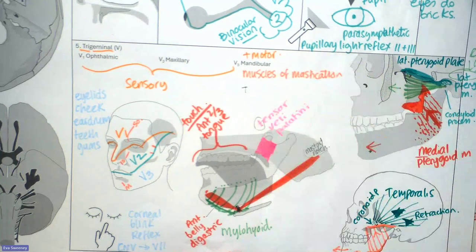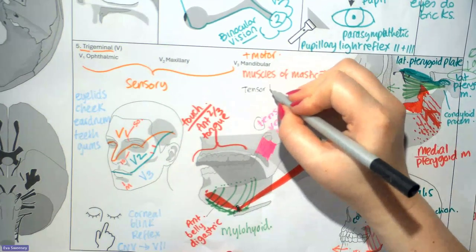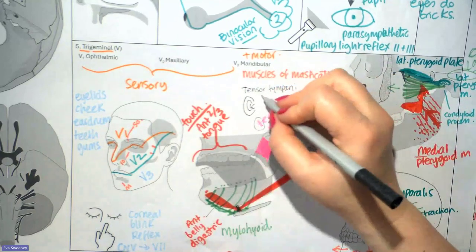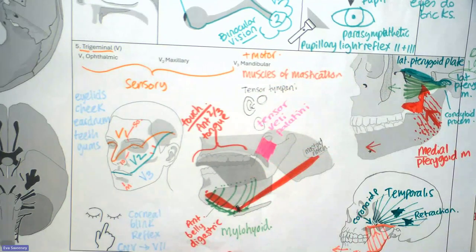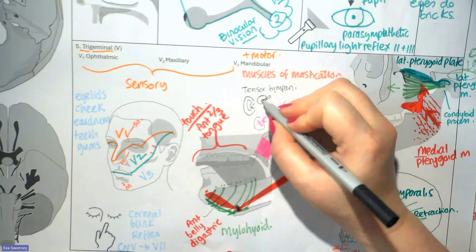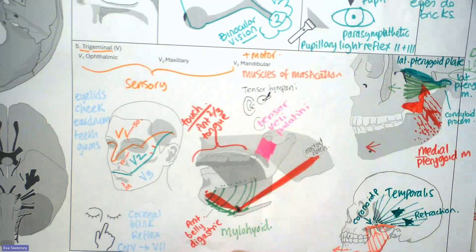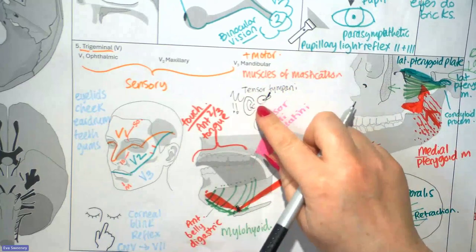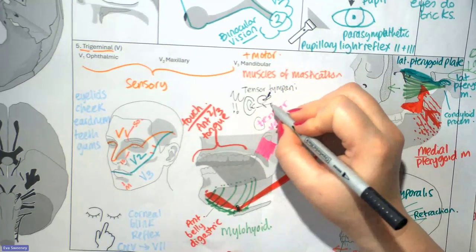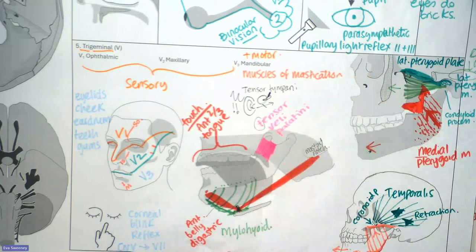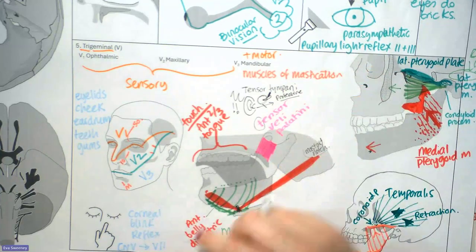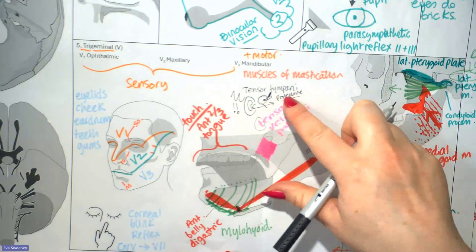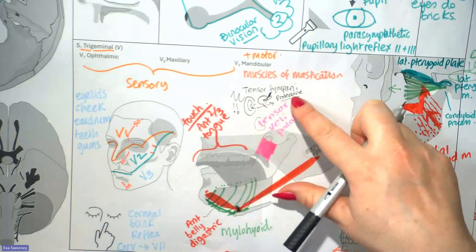V3 also innervates the tensor tympani, which is associated with the ear. The tensor tympani attaches to a little ossicle connected to the eardrum. When it contracts, it tightens the eardrum, which means that when very loud sounds enter the ear, we can tense the eardrum to interrupt some of that energy reaching our inner ear — so it's protective. This is called the tympanic reflex.